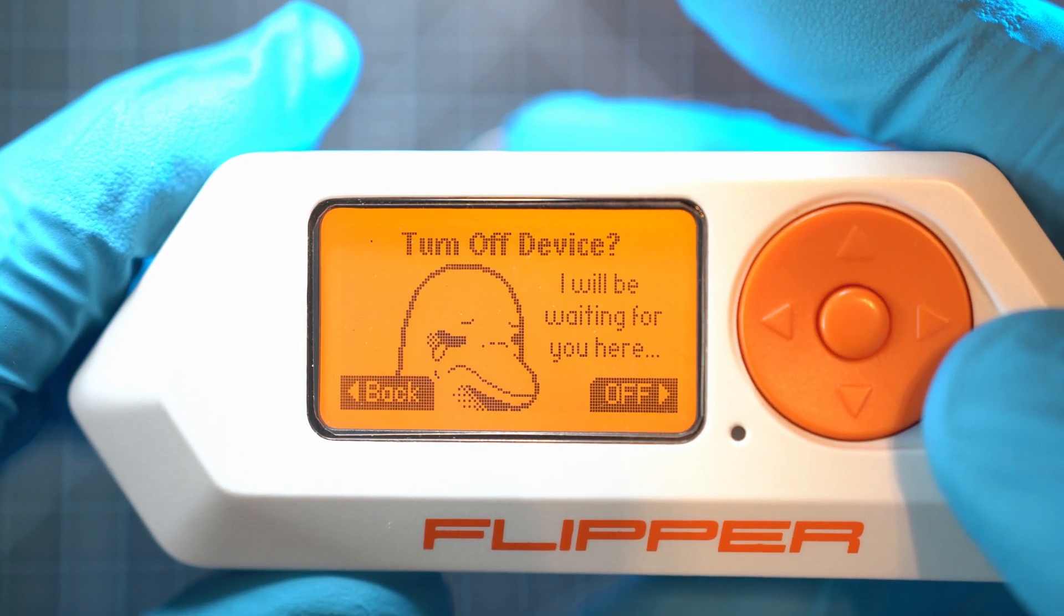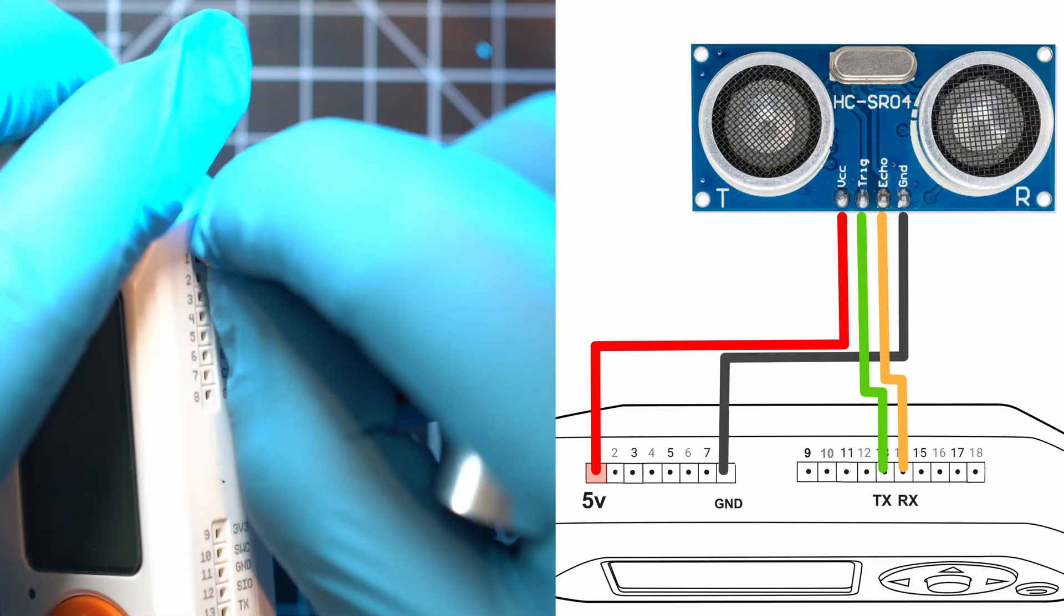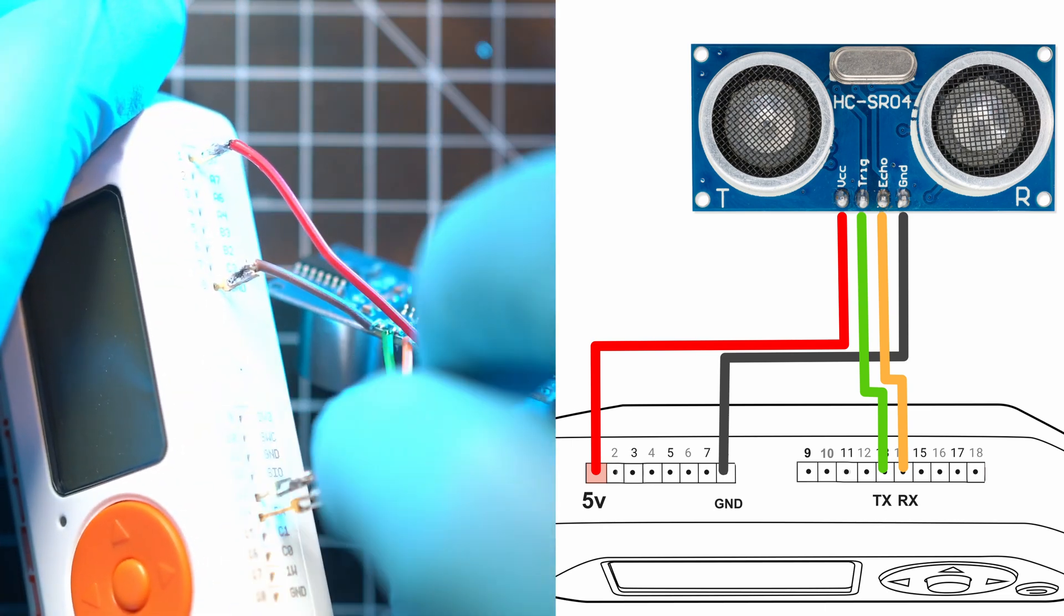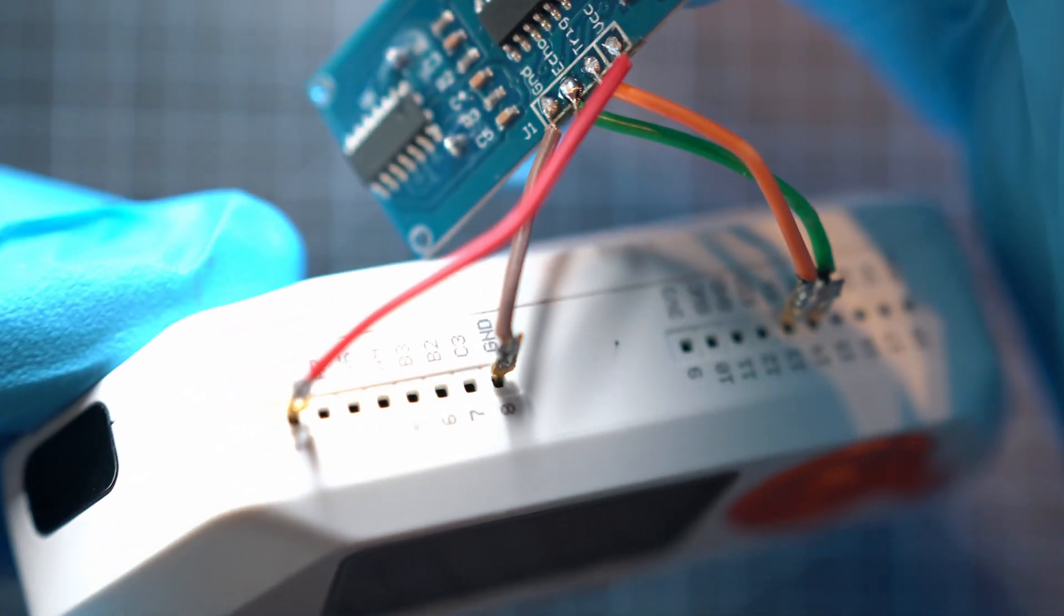Make sure to turn off flipper before connecting. You can follow this wiring diagram and all should work. Very simple: 5 volts, ground, TX and RX.